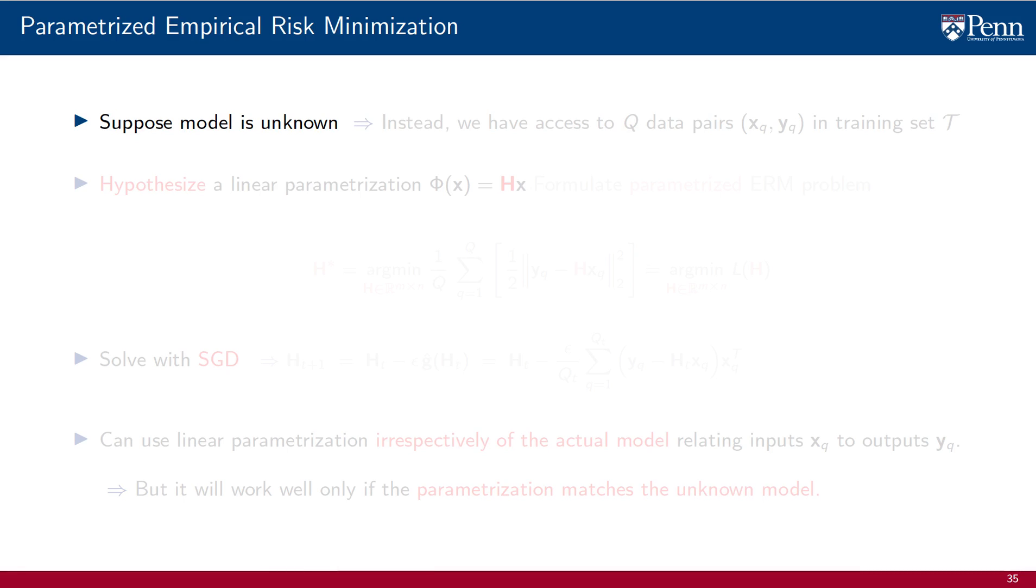But, in this course, we are more interested in cases where the model is unknown. Thus, even though we know the models of our fake data, assume that we don't know them. Instead, we have access to Q data pairs (xq, yq), which we lump in a training set T. We hypothesize a linear parametrization phi of x equals Hx. This is not the model, by the way, which we denoted by Ax, just a hypothesis on how outputs are related to inputs, an assumption on what is a good function class for this machine learning problem.